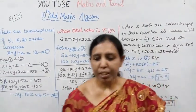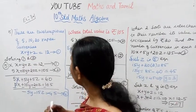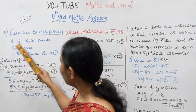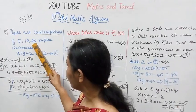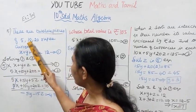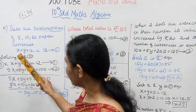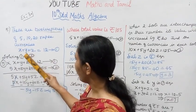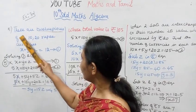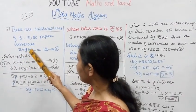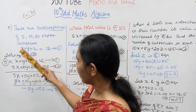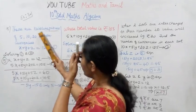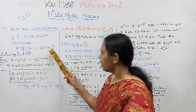We have 3 equations. First, there are 12 pieces — 5 rupee, 10 rupee, and 20 rupee. There are 12 pieces. So x plus y plus z equal to 12, where x is the 5 rupee count, y is the 10 rupee count, and z is the 20 rupee count. This is the first equation.